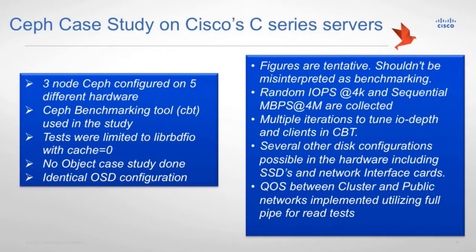To do that, I have done some case study. I took three to five configurations of hardware that I had with me. But don't misinterpret the results — this was just conceptual testing; it's not benchmark data that I'm trying to share with you all. I used the Ceph benchmarking tool in order to arrive at these values, and I did not use any of the kernel RBD or the object test cases. I just used libRBD in order to see how these particular hardware configurations are working.